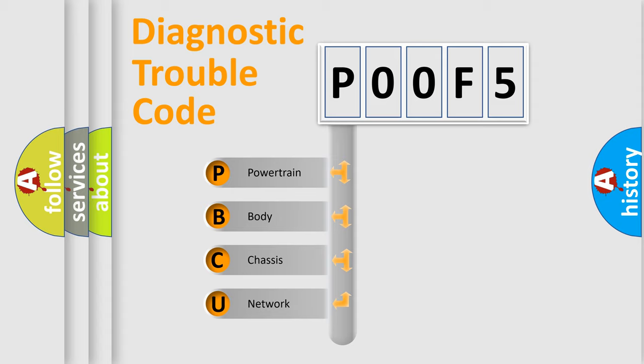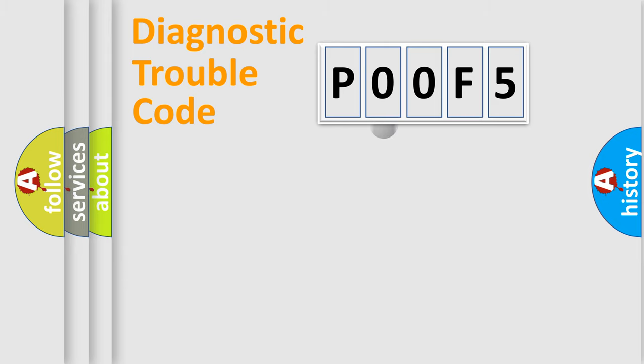We divide the electric system of automobile into four basic units: Powertrain, Body, Chassis, and Network. This distribution is defined in the first character code.